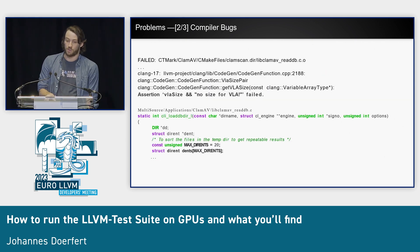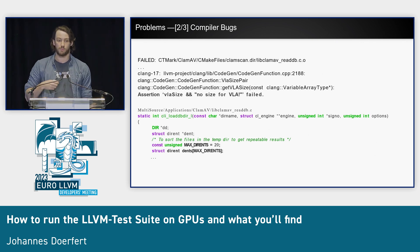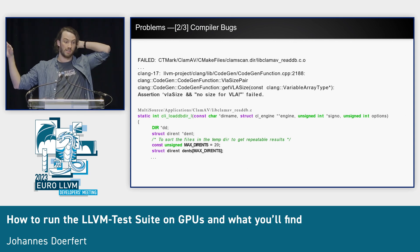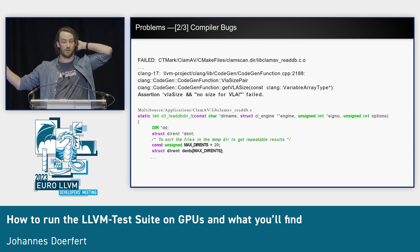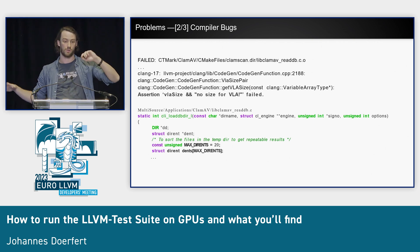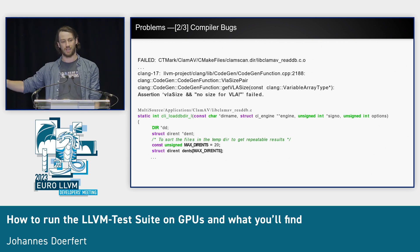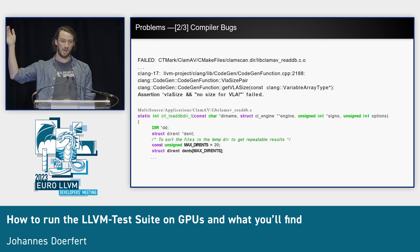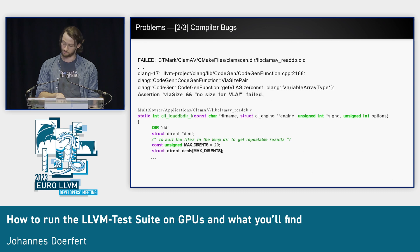Then we had compiler bugs. I only show one, but we found multiple. This is VLA arrays — the compiler complains that the size is not set, assertion crash — all not good. We can fix those as well. This is kind of what we did this for: to expose more code into our pipeline and see what happens.